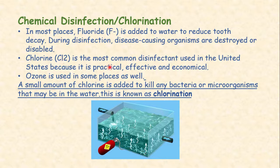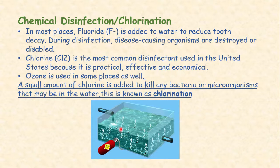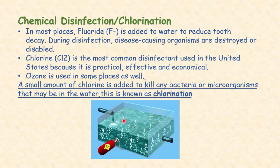Chlorine gas is the most common disinfectant used because it is practical, effective, and economical. Ozone gas is also used in some places. In chlorination, chlorine gas is passed or bubbled through the water to kill bacteria or unwanted microorganisms. This process is named chlorination. Only a specific amount of chlorine is used — an excessive amount can be harmful and will make the water unsuitable for drinking. Chlorination uses a small amount of chlorine gas to kill any bacteria or microorganisms that may be in the water.